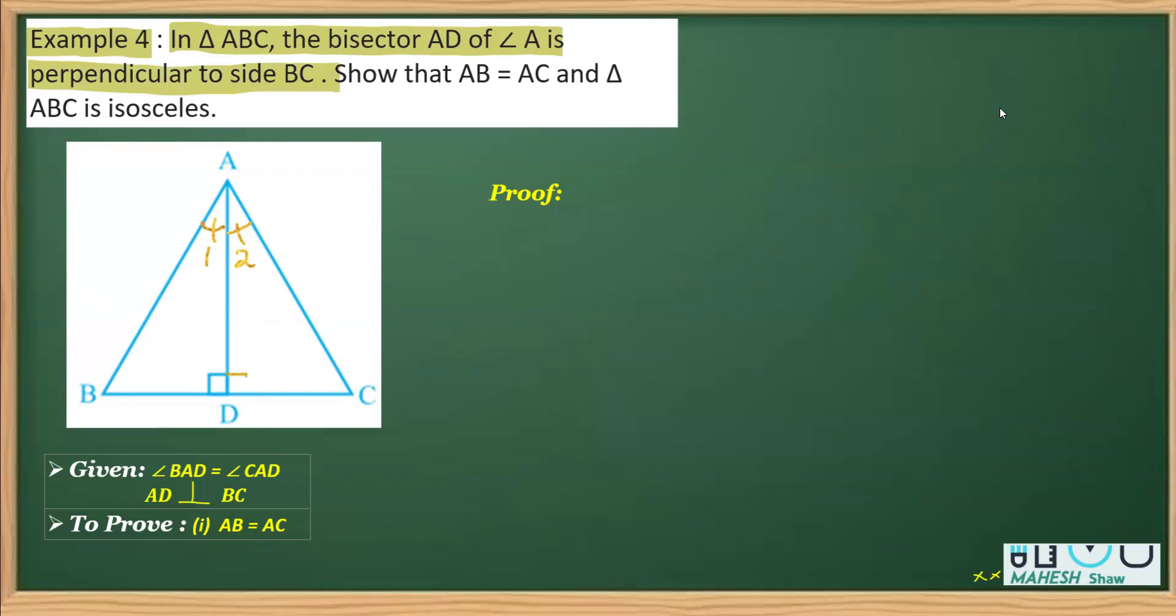Now what we need to show is AB is equal to AC. These two lengths AB and AC we have to prove them equal, and the triangle ABC is isosceles. Well, if AB is equal to AC, the triangle will be an isosceles triangle. So you need to write down the given part here: these two angles are equal and it is perpendicular to BC. All we have to prove is AB is equal to AC.